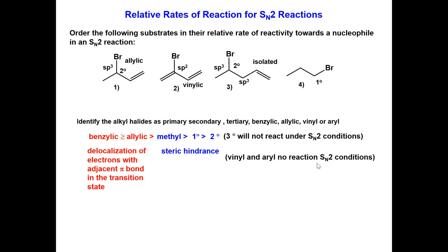Knowing this, we expect the allylic compound 1 to be the fastest, followed by 4, the primary alkyl halide, followed by 3, the secondary alkyl halide, and the slowest, in which no reaction would occur at all, is the vinylic alkyl halide 2.